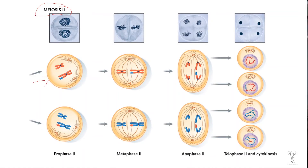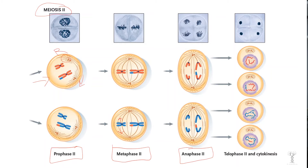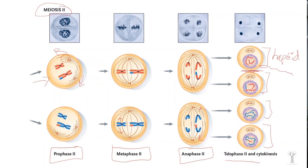We now begin meiosis II with prophase II: DNA is condensed and centrioles move to opposite poles, creating spindle fibers. In metaphase II, chromosomes line up so that sister chromatids can separate. In anaphase II, sister chromatids move to opposite ends of the cell. After telophase and cytokinesis, we have four new cells with half the DNA of the original cell. The diploid germ cells in the testes or ovaries have produced haploid gametes — sperm in males and eggs in females.